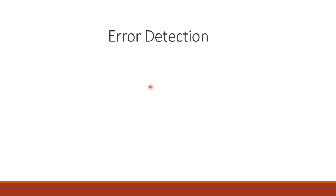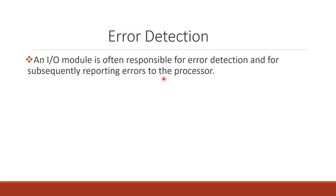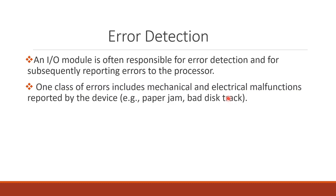Error detection is the next function. Errors are detected and subsequently reported to the processor by the IO module. There are two classes of errors. One class is mechanical and electrical malfunctions reported by the device, like a paper jam or bad track. If a paper jam occurs while printing, a message is sent to the computer through the IO module — that is error reporting and detection.